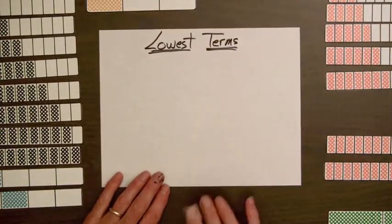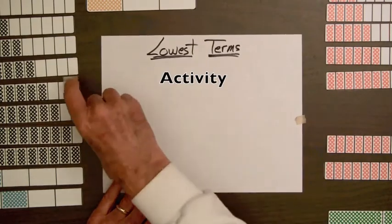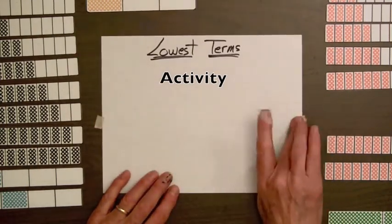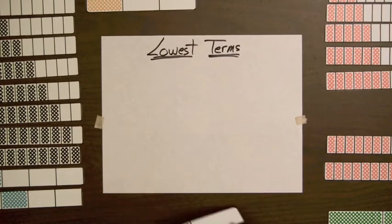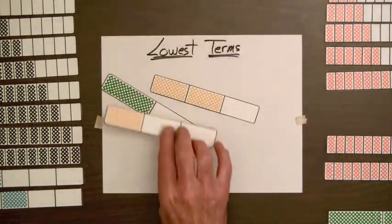Those whose fractions are in lowest terms and those whose fractions are not in lowest terms. So let's just pick a few of these out here. This bar, two-thirds, one-third,